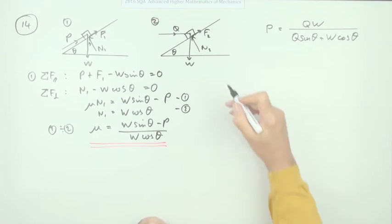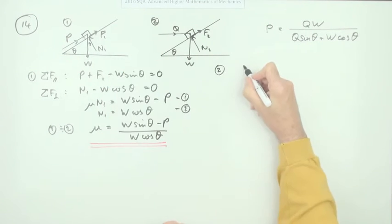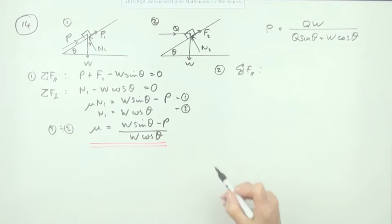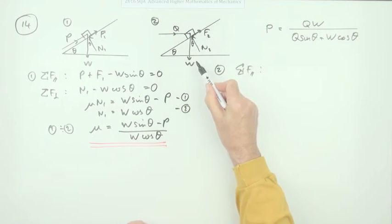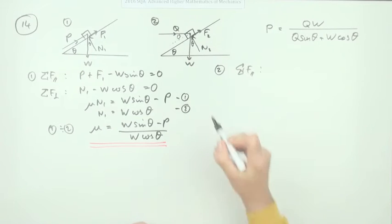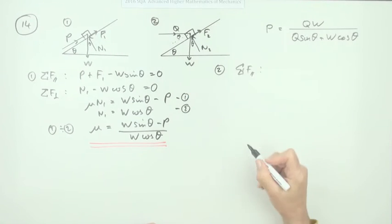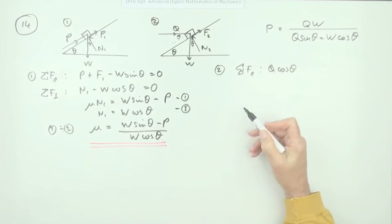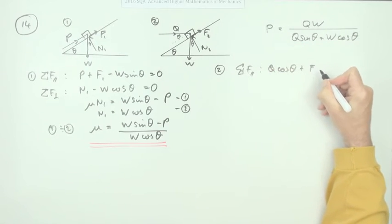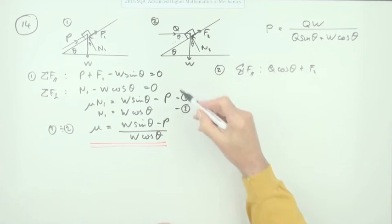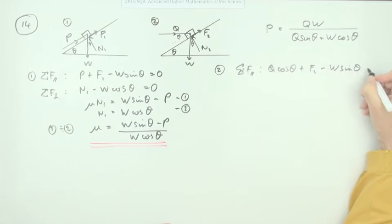Situation two then. Same thing, what about the forces? This angle is still θ, but taking that parallel perpendicular to the plane, that will be θ there from those alternate angles. So parallel to the plane you've got Q, and it's next to the θ, so that's Q cos θ plus the F2, but W is acting against it and that's opposite θ, so that's a sine minus W sin θ equals zero.